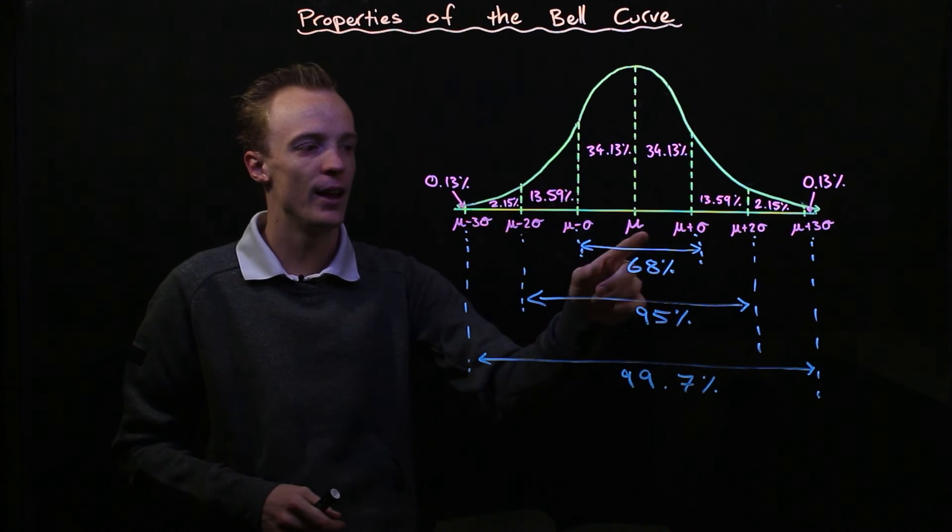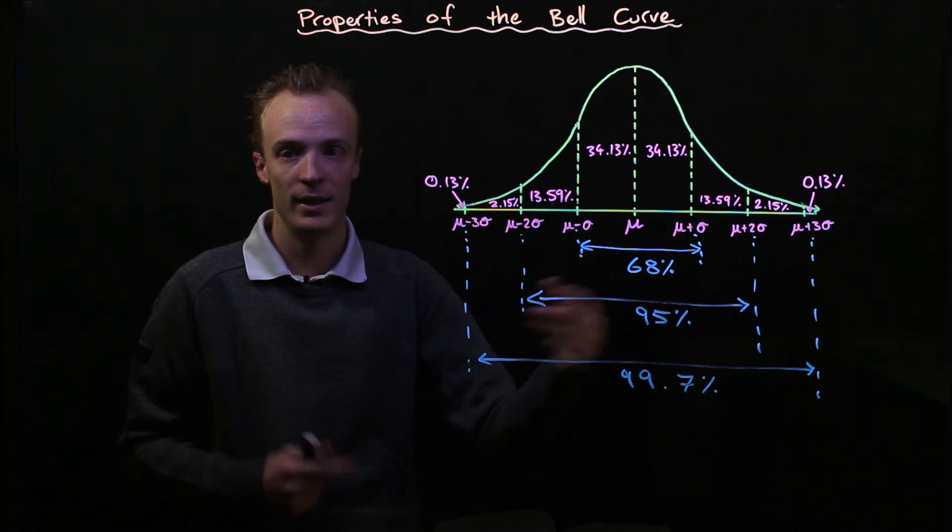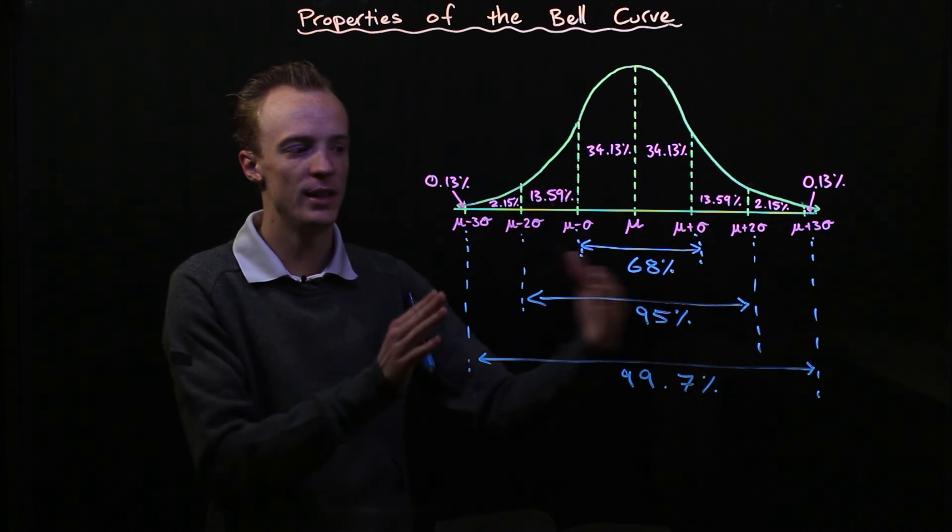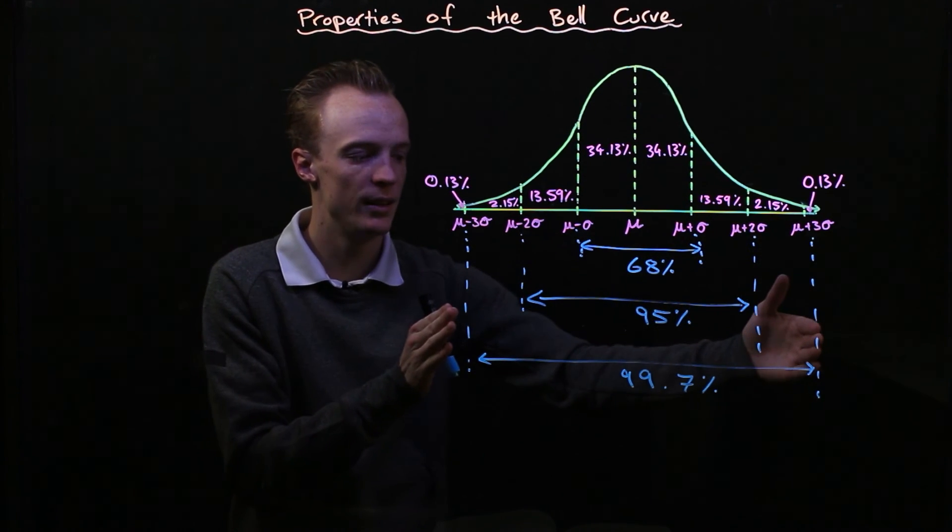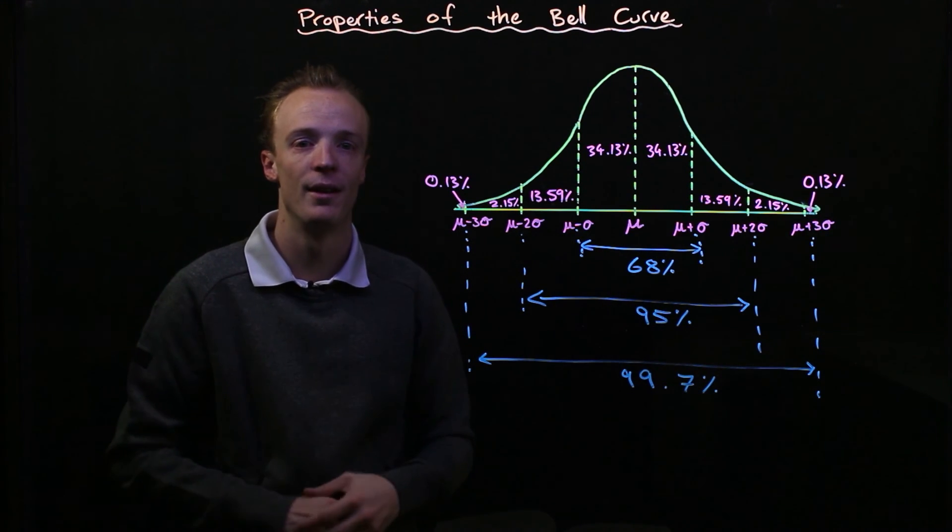One standard deviation away from the mean will be 68 percent of the data. Two standard deviations from the mean will be 95 percent of the data, and three standard deviations will be 99.7 percent of the data.